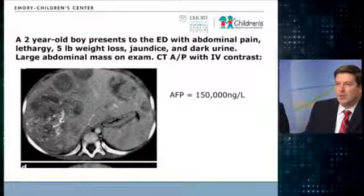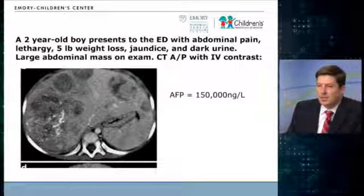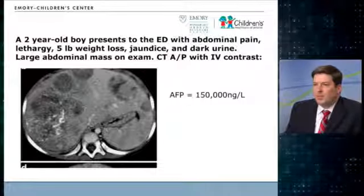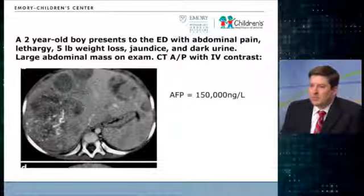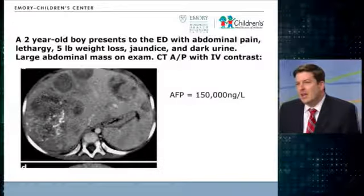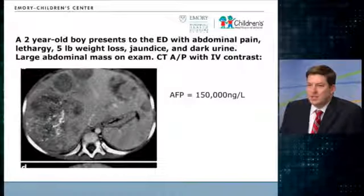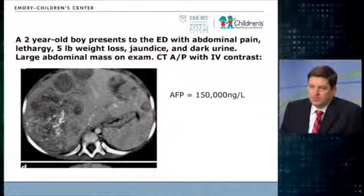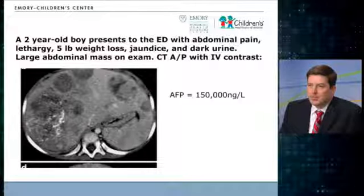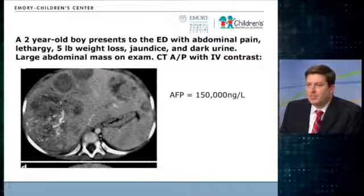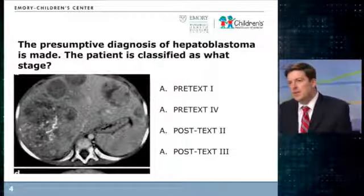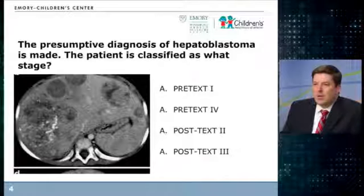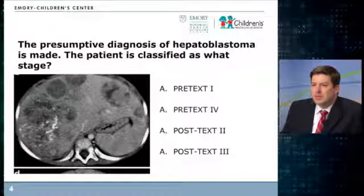The first scenario to cover this staging issue: a two-year-old boy presents with abdominal pain, lethargy, five-pound weight loss, jaundice, and dark urine. On exam he has a large abdominal mass. CT with IV contrast shows multifocal disease affecting all sectors of the liver with an elevated AFP. A presumptive diagnosis of hepatoblastoma is made based on that. How would people stage this patient?